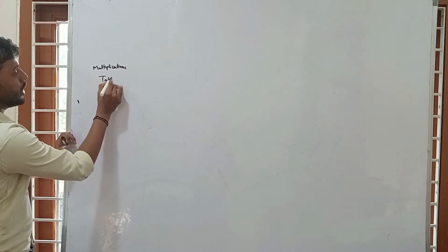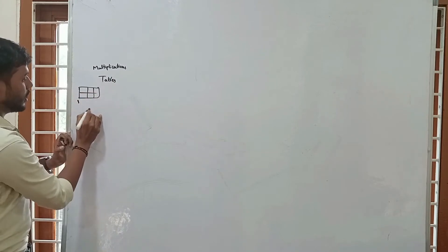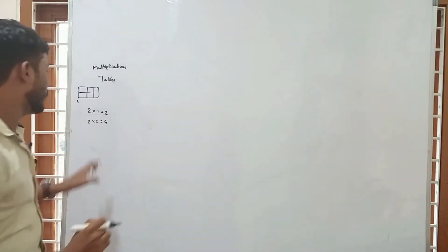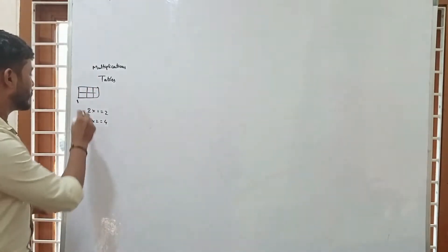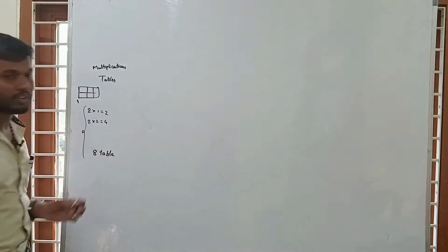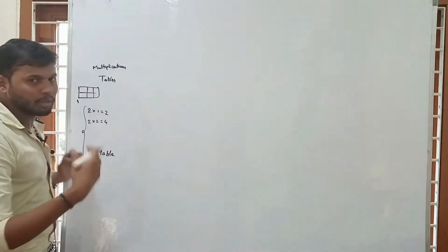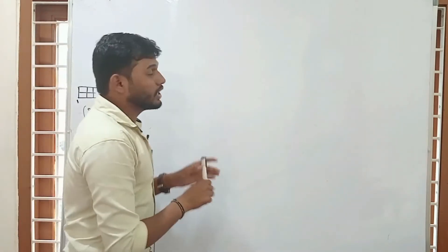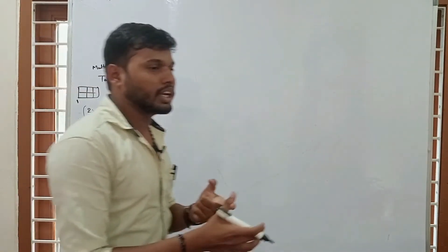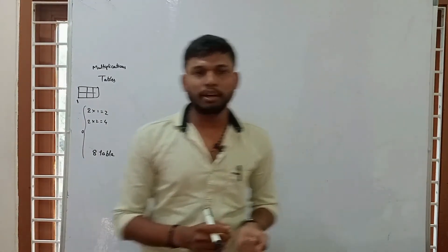We have tables — like 2 times 1 is 2, 2 times 2 is 4, this type of table. Interviewers are asking: write the program for the 8 tables. Whether they ask for 8, 2, or 5 tables, we can handle it using primitive data types, operators, and grouping conditions. We can make it easy.